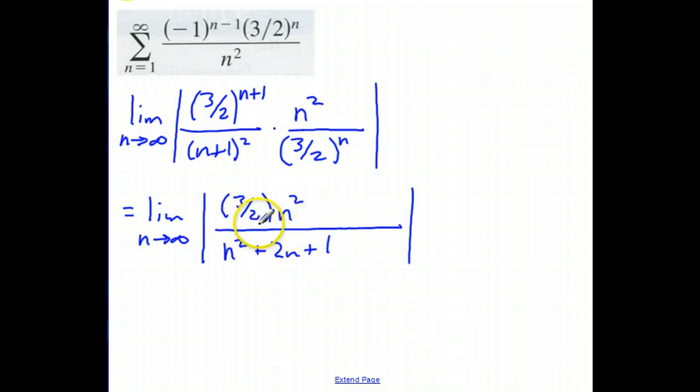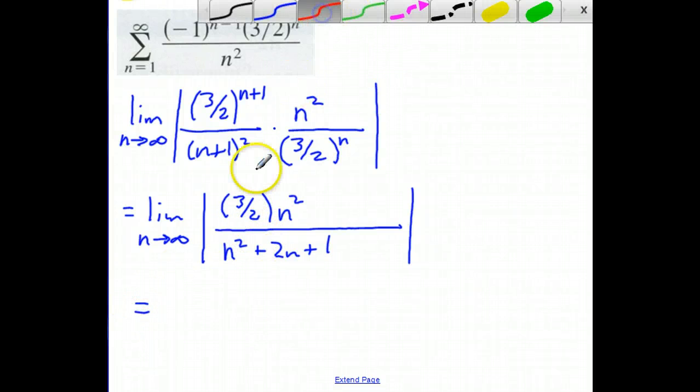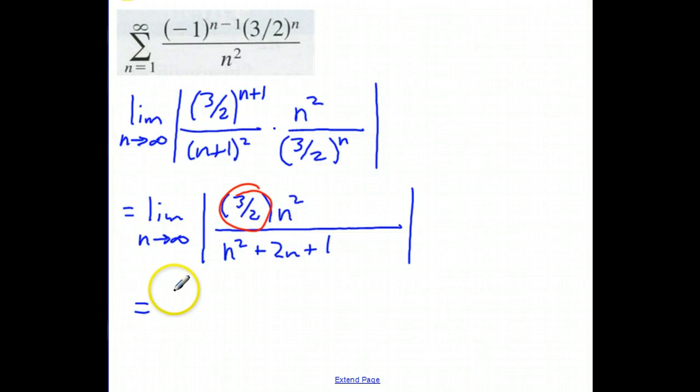And if I have a polynomial on top and a polynomial on the bottom, and I'm taking the limit as n approaches infinity, and it's the same degree top and bottom, then all I have to worry about is my lead coefficient. Right there. So this whole thing equals 3 halves.